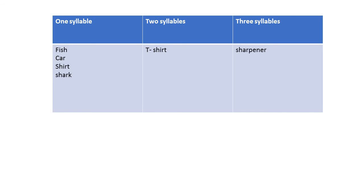We have words which have one syllable, like fish, car, shirt, shark, and two syllables like T-shirt. Three syllables — sharpener.